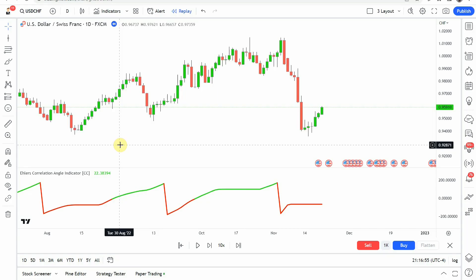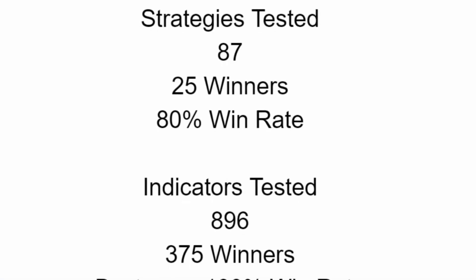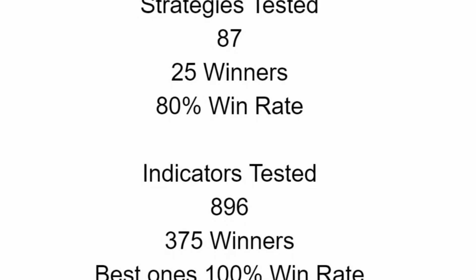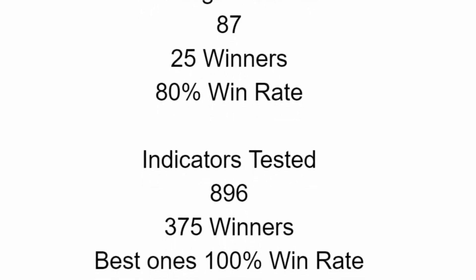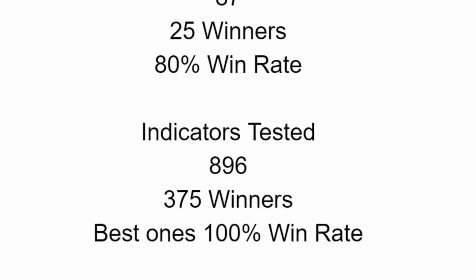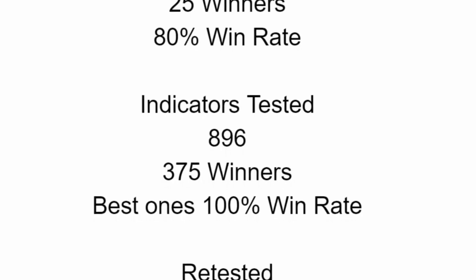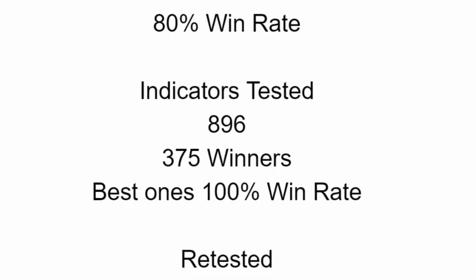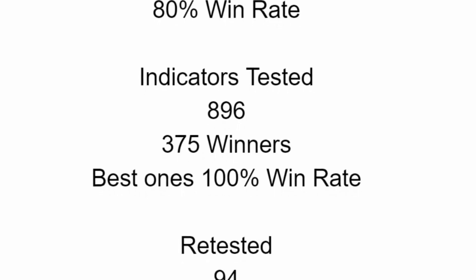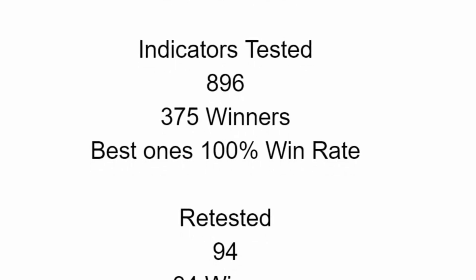As I said, today we will be looking at an advanced testing of the Ehlers Correlation Angle Indicator. Before we do, I wanted to put the testing scoreboard up for everyone to see. To date, we have tested a total of 87 different strategies, with 25 of them being winners — the best ones achieving an 80% win rate. We have also tested a total of 896 indicators, with 375 of them being winners, and the best ones achieving a 100% win rate. Go back and watch those videos to understand the context and see what you can get out of those winning indicators.